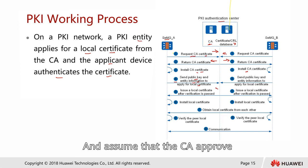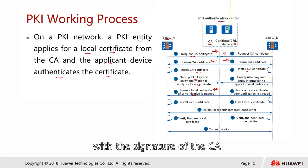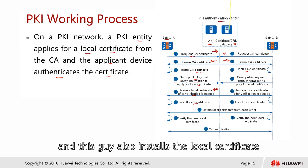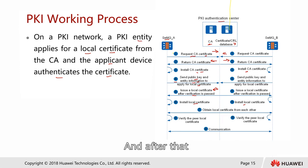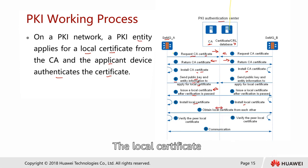Assuming the CA approves, the CA will then issue the local certificate with the signature of the CA. And after that, you will install the local certificate, and the other firewall also installs the local certificate. After that, these two devices can share the local certificate with each other.